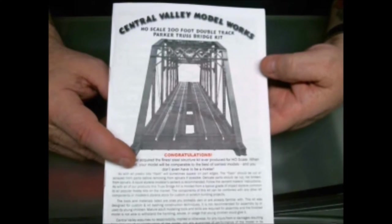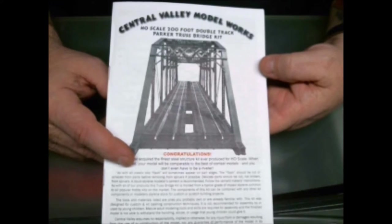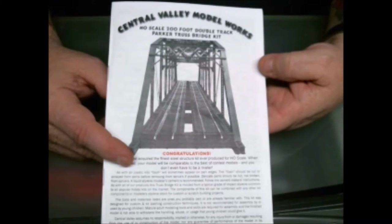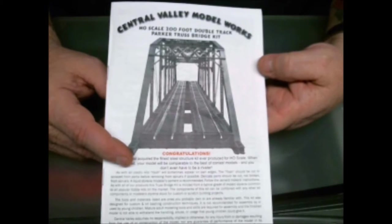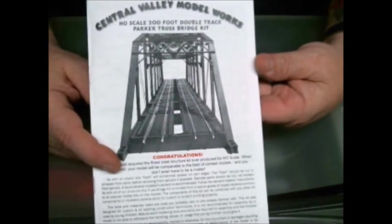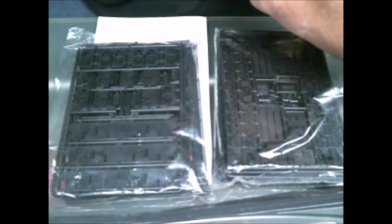This is part one of the Central Valley Model Works 200 foot double track truss bridge kit build. The instructions, the kit comes with four packs of goodies.